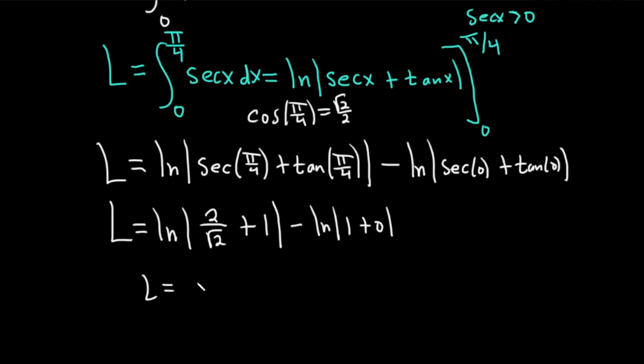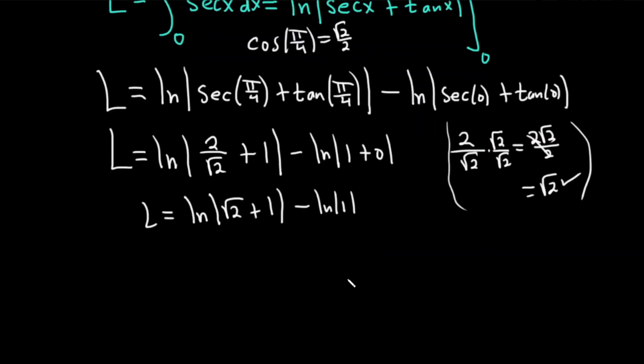This is L equal to the natural log. We can clean this up. This 2 over square root of 2, you can rationalize it by multiplying by root 2 over root 2. So it becomes 2 root 2 over 2. So you get square root of 2 plus 1. And then here we get minus natural log absolute value of 1. However, the natural log of 1 is 0. So this is going to be 0.